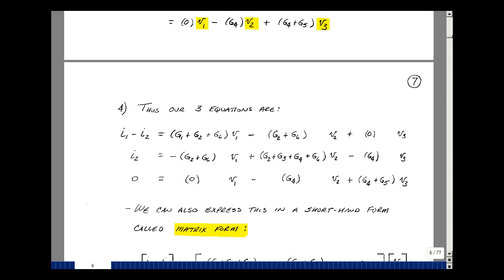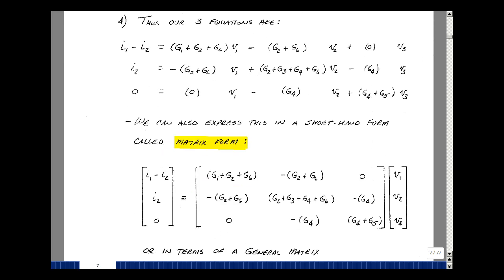That's at the top of page 7. Equations in this form are sometimes awkward to work with, so we have a shorthand notation called a matrix. The first equation says I1 minus I2 equals (G1 plus G2 plus G6) times V1, minus (G2 plus G6) times V2, plus 0 times V3. The second equation: I2 equals minus (G2 plus G6) times V1, plus (G2 plus G3 plus G4 plus G6) times V2, minus G4 times V3. And lastly, 0 equals 0 times V1, minus G4 times V2, plus (G4 plus G5) times V3.